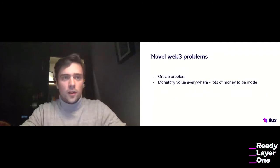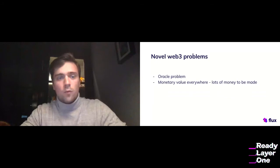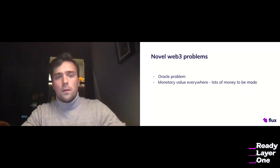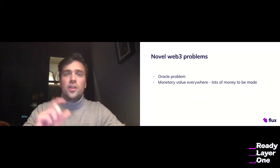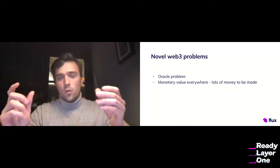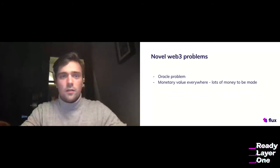The second type of problem is what I like to call the novel or Web3 problems. For us at Flux, the most important problem we've been thinking about a lot lately is the Oracle problem. Basically, the Oracle problem is how to get data from the real world onto a blockchain — or more specifically onto Flux protocol — and how to make sure that it's actually verified and true.